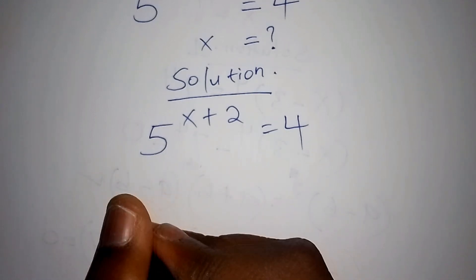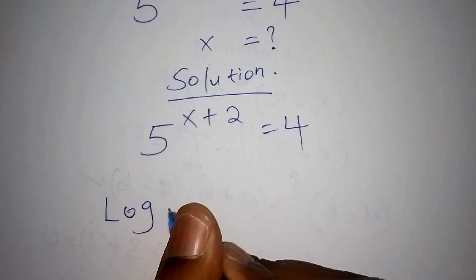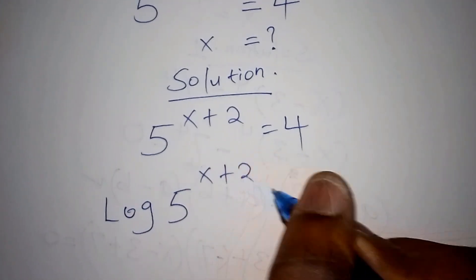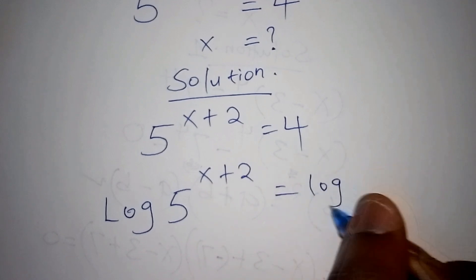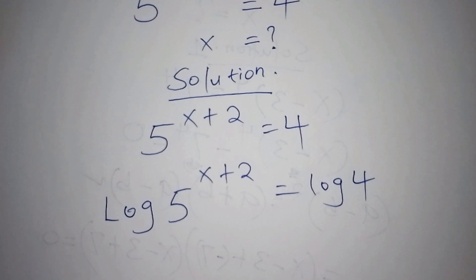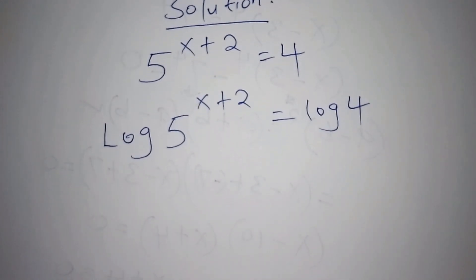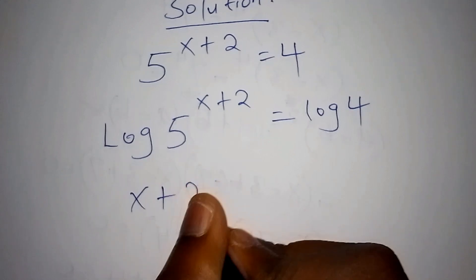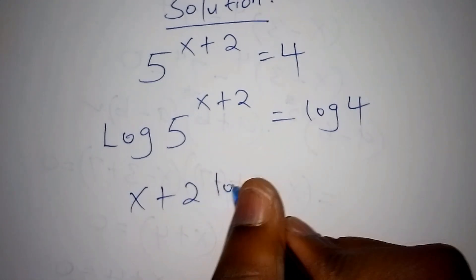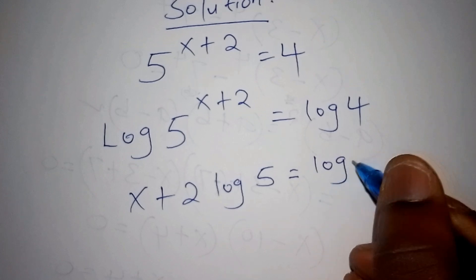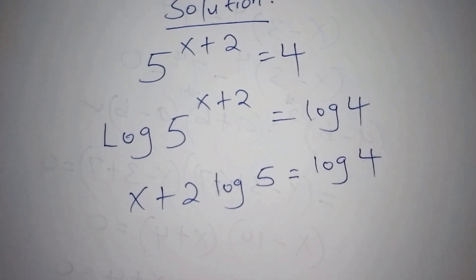We shall have the log of 5 to the power of x plus 2 is equals to the log of 4. The log of 5 to the power of x plus 2 can also be written as x plus 2 times log 5 is equals to the log of 4.